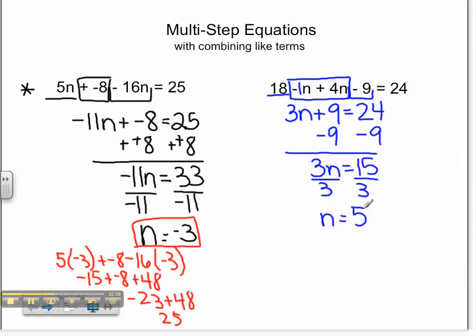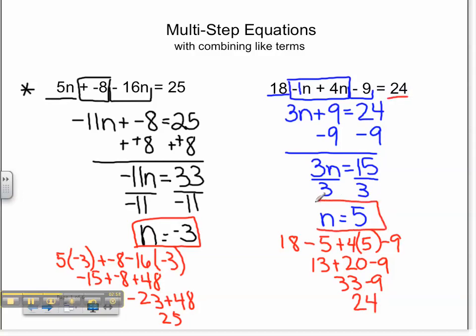As always, we are going to check our work in the original equation. So we have 18 minus 5 plus 4 times 5 minus 9. 18 minus 5 is 13 plus 20 minus 9. 33 minus 9 equals 24. That would be the solution to our original equation. Therefore, n equals 5 is the correct solution to our equation.